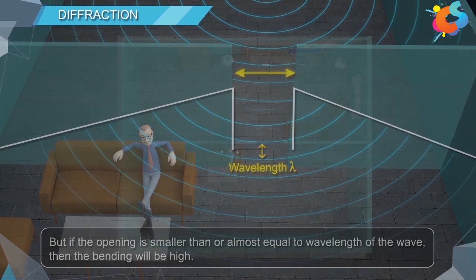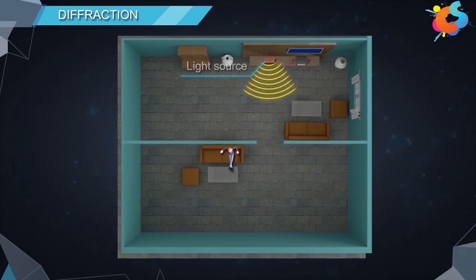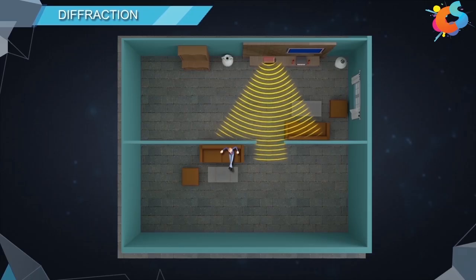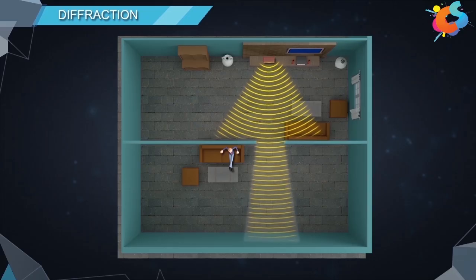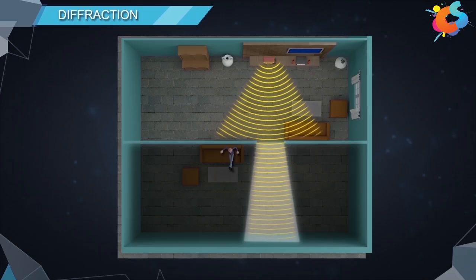Now consider another situation where we have a light source instead of a music system. As we can see here, the light waves have illuminated only part of the room. This means that the light waves did not bend to illuminate certain regions. This type of region where a particular wave is unable to penetrate is called a shadow region.